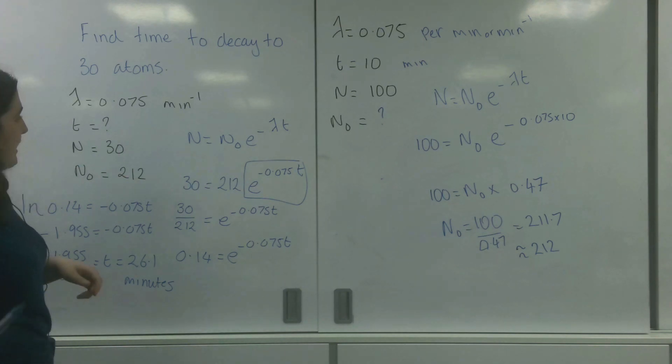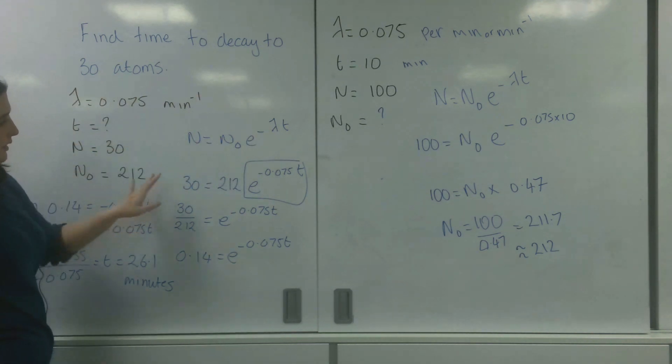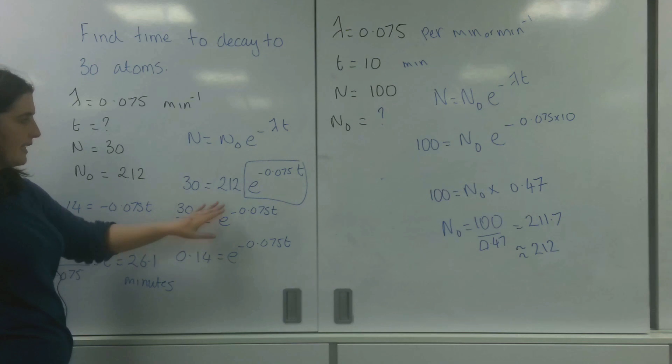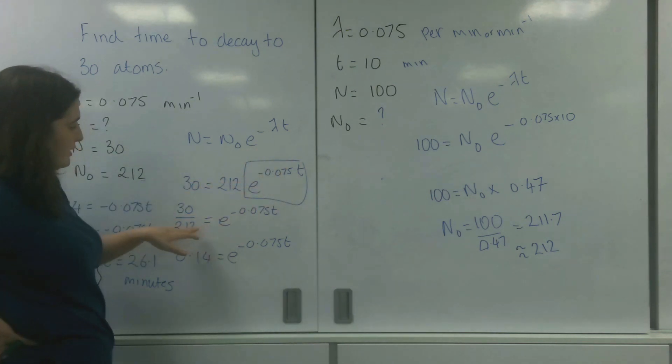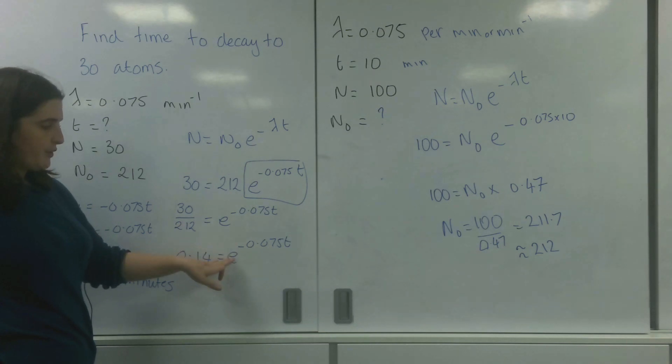So just to recap what I did there. N equals N naught E to the minus lambda T. I put my numbers in, and then I had to get this E bit on its own. So I divided it.